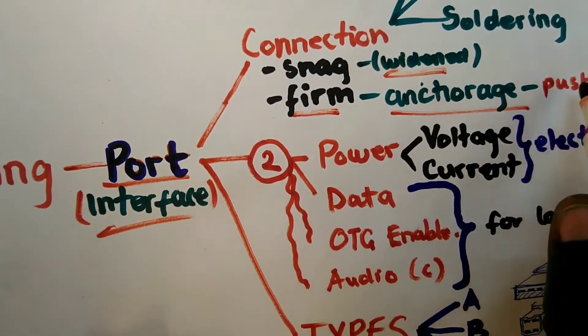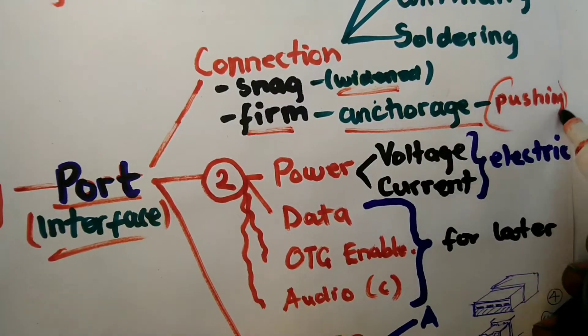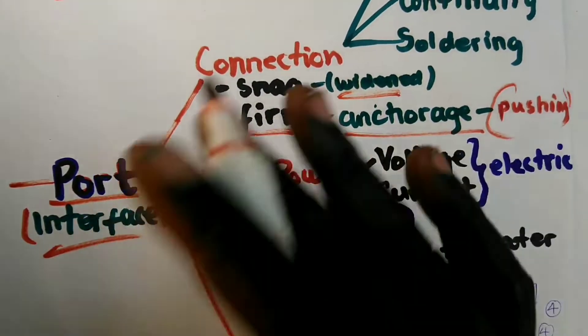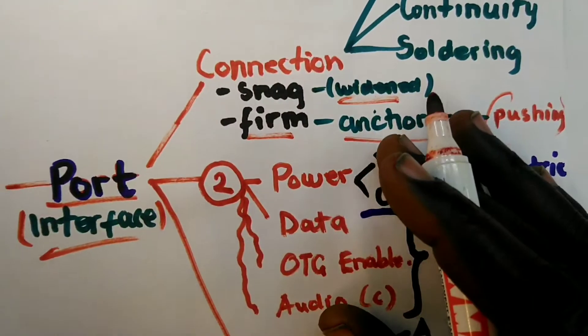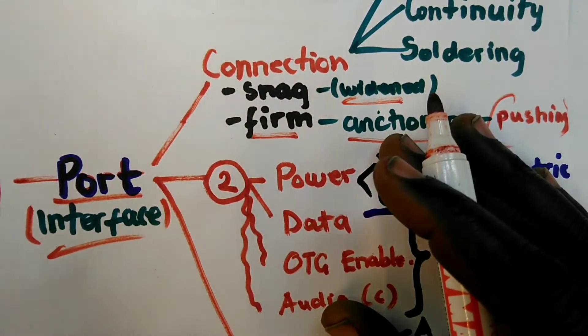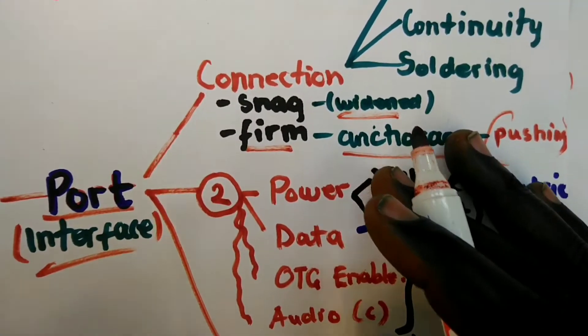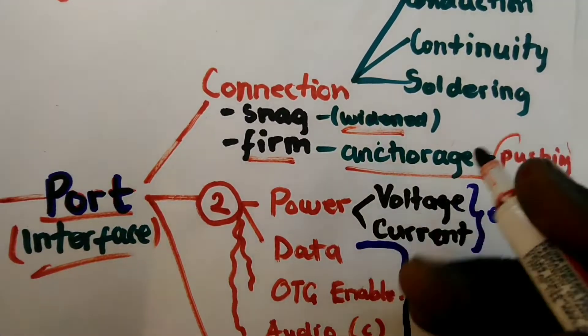In other words, it should be well anchored to support the pushing and pulling force when you insert it, not the bending force. Never bend your phone's charging system or USB while in the port. Just push in, pull out, that's it.